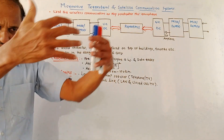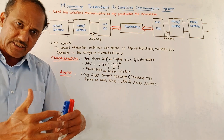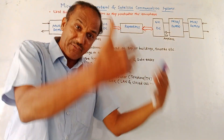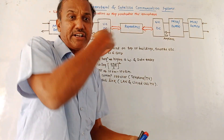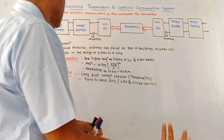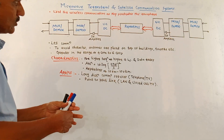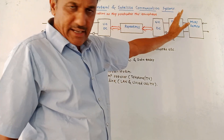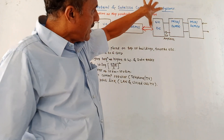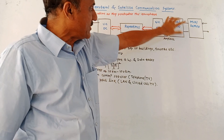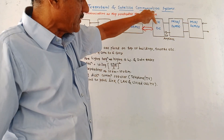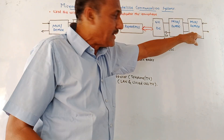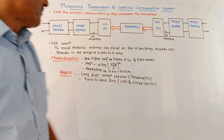A repeater is a block which receives the signal, amplifies it, and retransmits it. Here we have shown the repeaters. At the other end, again the same blocks are shown: up converter, down converter, modulator, demodulator, mux and demux.